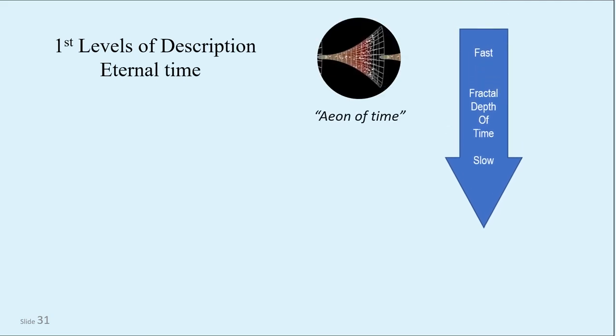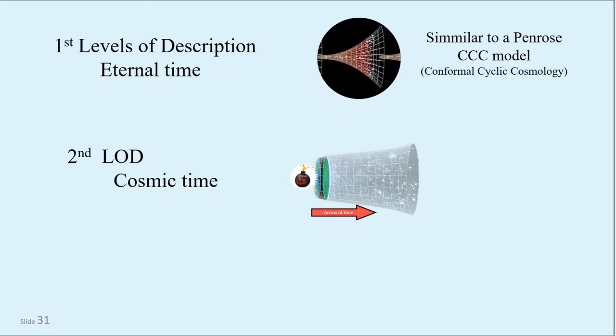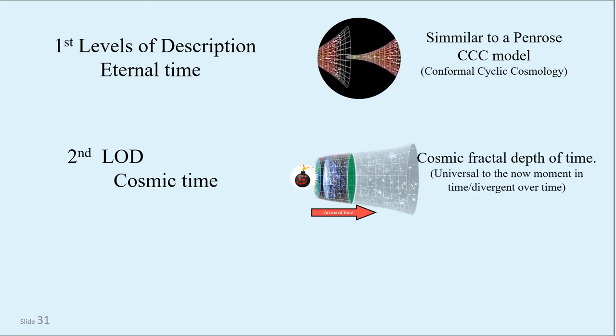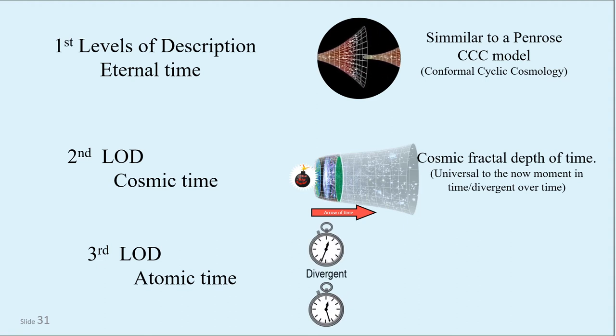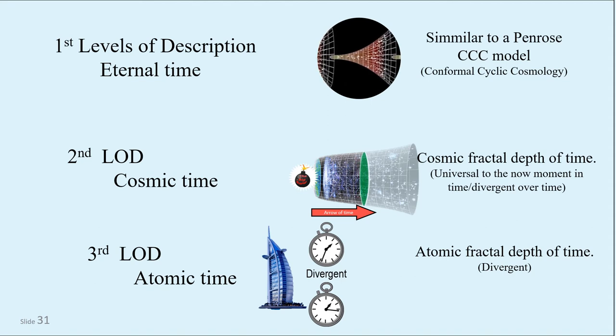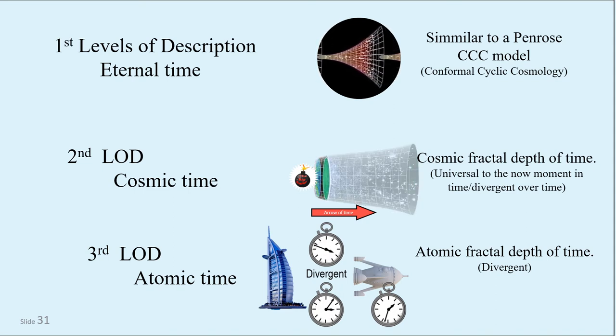Time also has three levels of description, whose fractal depth gives our universe its complex dimensional depth, the first being eternal time, where time is in an eternal fractal loop. This has similarities with Sir Roger Penrose's conformal cyclic cosmology model, but with infinitely many eons of time emerging from and to the Big Bang continuum. The second level of description is cosmic time, where the electromagnetic arrow reveals the evolving cosmos. How far down the cosmic fractal depth indicates whereabouts our aeon of time is on its evolutionary cycle. And finally, the third level of description, atomic time, where the rate of change simultaneously differs in the fractal depth of a gravity well, or for a faster moving object. The faster an observer measures the Hubble constant, the faster their rate of change, and the slower their atomic clock.